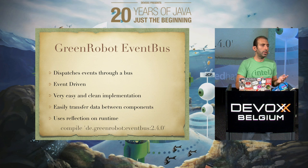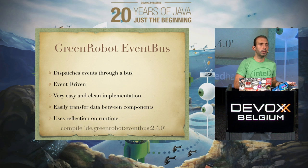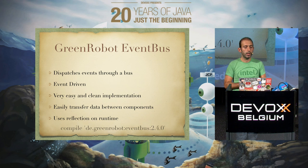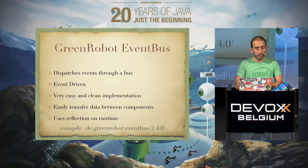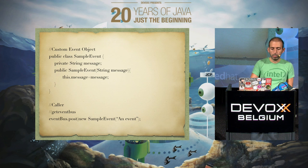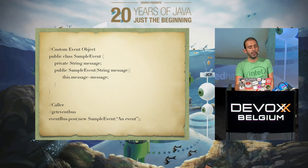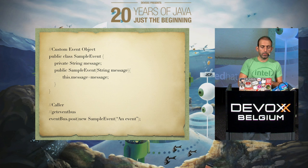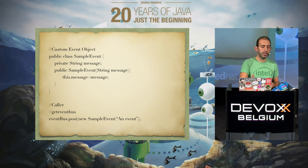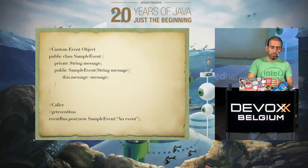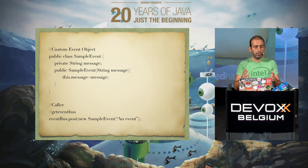EventBus easily transfers data between components — from activity to activity, or fragment to service. You can transfer any data between any component. It uses reflection at runtime. To use GreenRobot EventBus, you need to create custom events. Here's a sample event from the website: it's a SampleEvent which carries some data — a String in this case. You can create a constructor to easily create and fire the event in one line.